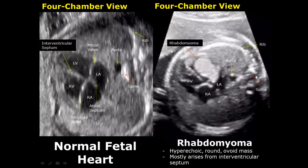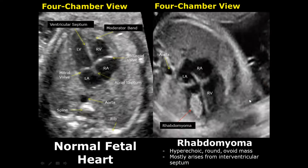A rhabdomyoma is a cardiac tumor that usually arises from the interventricular septum. It will appear as a hyperechoic round or ovoid mass. Here we have another case of rhabdomyoma — a hyperechoic round mass occupying the ventricle.